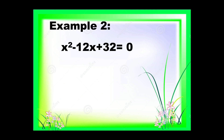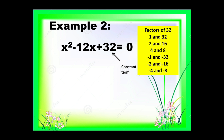Example number 2: x squared minus 12x plus 32 equals 0. We are going to think of two numbers: when you multiply the answer is 32, and when you add the answer is negative 12. The factors of 32 are 1 and 32, 2 and 16, 4 and 8, negative 1 and negative 32, negative 2 and negative 16, and negative 4 and negative 8. Among these factors, we have negative 4 and negative 8, because negative 4 plus negative 8 is negative 12, and negative 4 times negative 8 is positive 32.